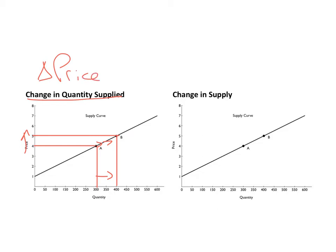As the price of the good rises, quantity supplied increases. As the price of a good falls — for example, if the price were to fall to $3 — we would see quantity supplied fall to 200. A change in quantity supplied is caused by a change in the price of the good.